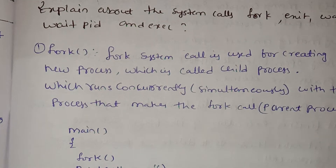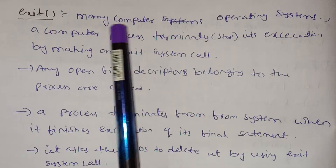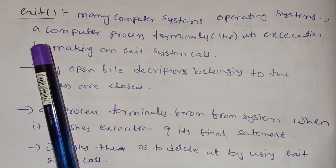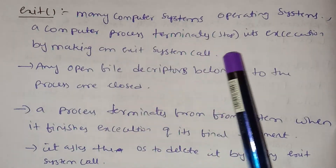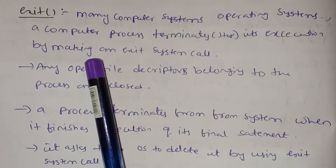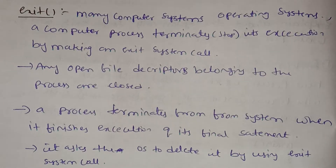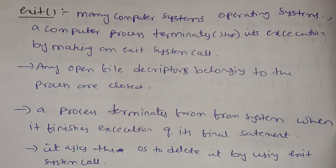Next is the system call exit. Exit is used to stop or terminate a process. When a computer process terminates, it stops its execution by making an exit system call. Many computer operating systems use this mechanism when a process needs to stop.